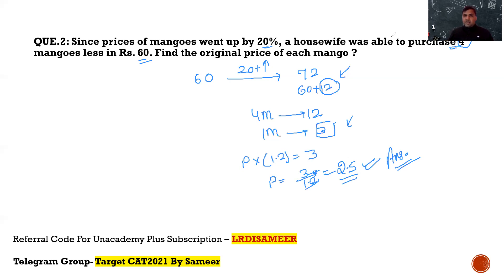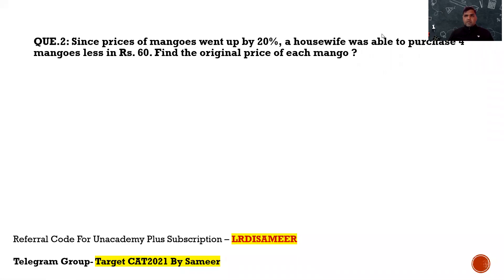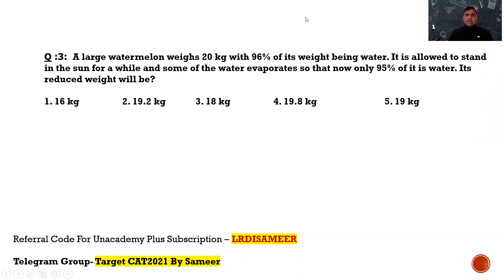Moving on to the next question. Here's question number 3. Question number 3 says, a large watermelon weighs 20 kg with 96 percent of weight being water. It is allowed to stand in the sun for a while and some of the water evaporates so that only 95 percent of its weight is water. Its reduced weight will be how much?